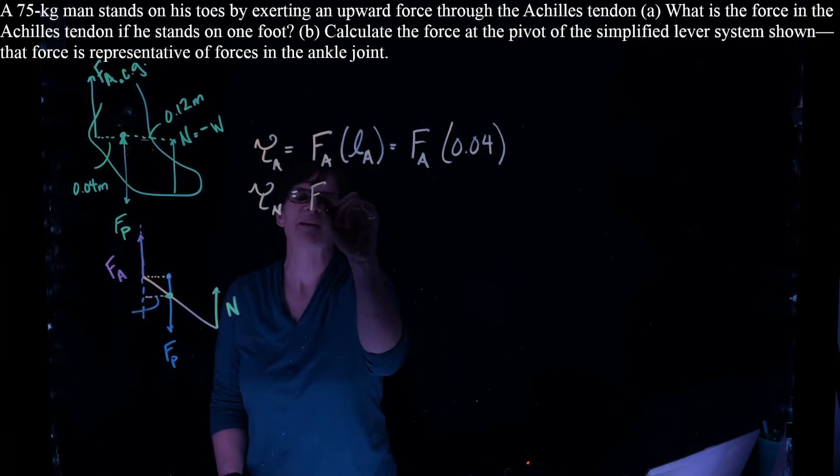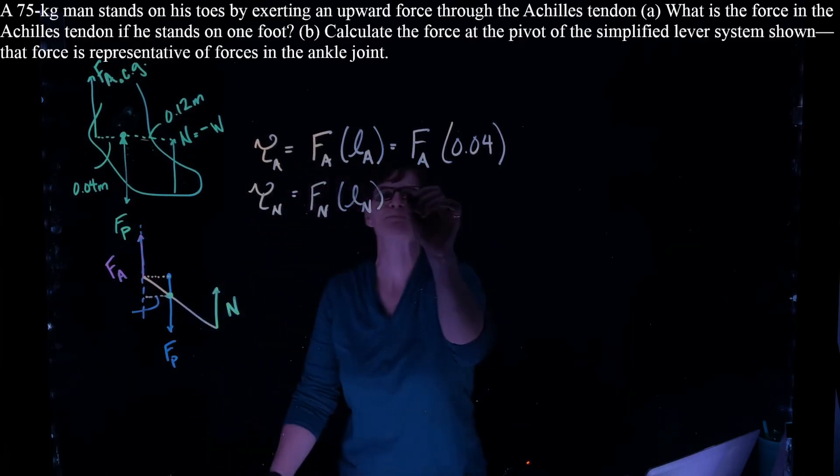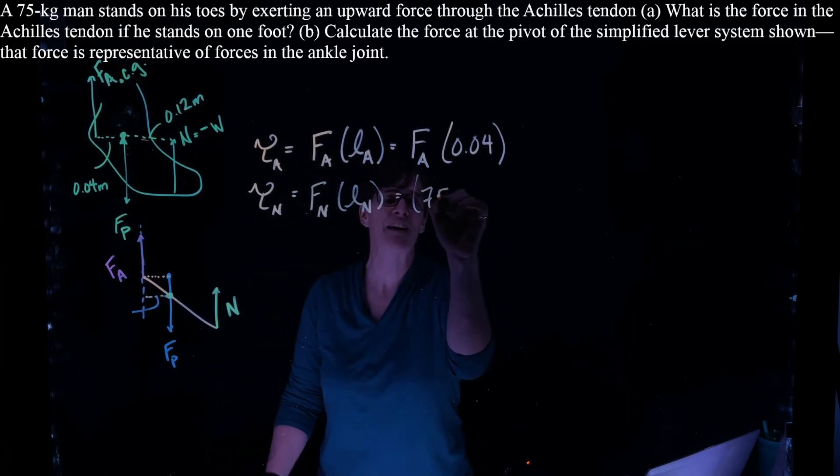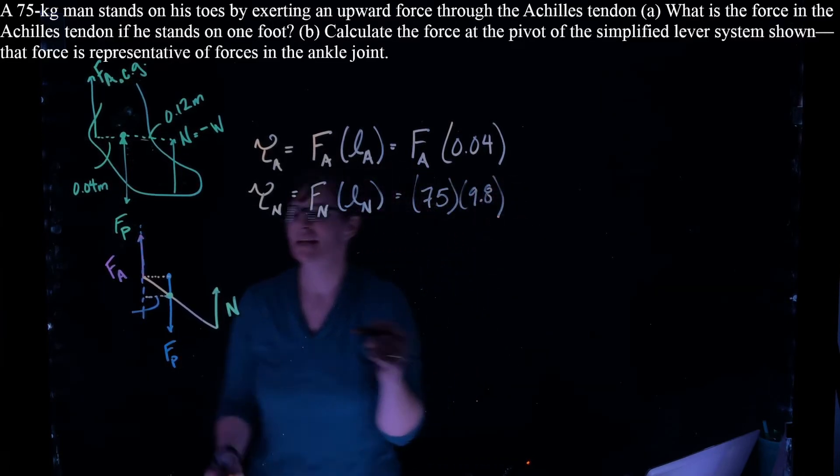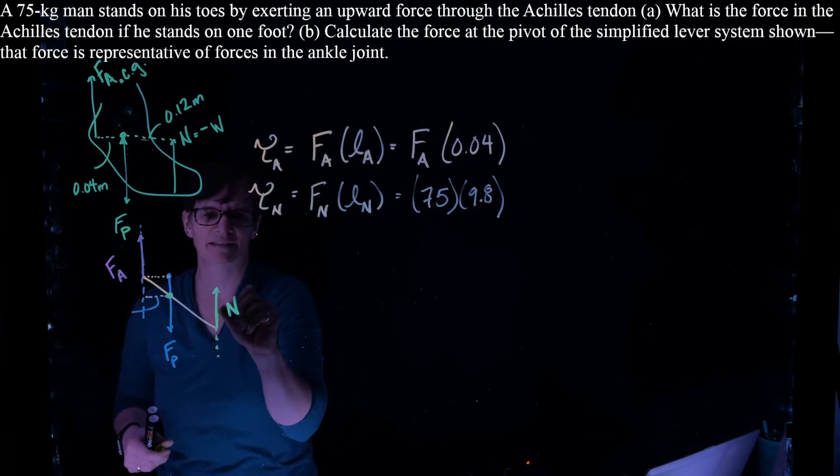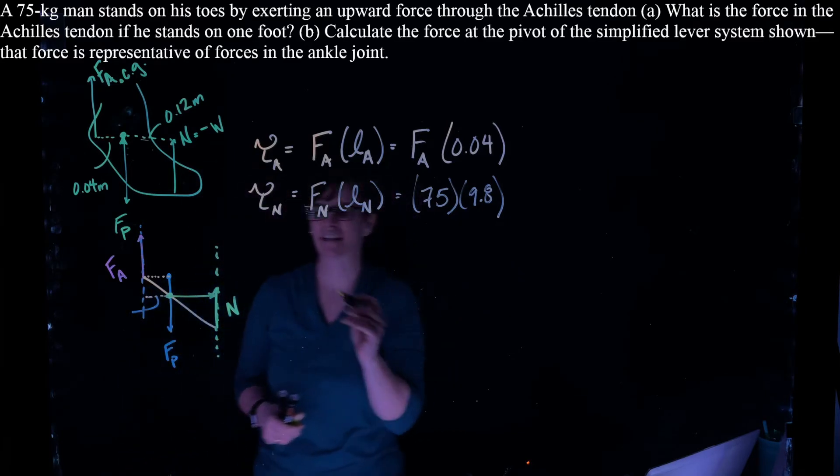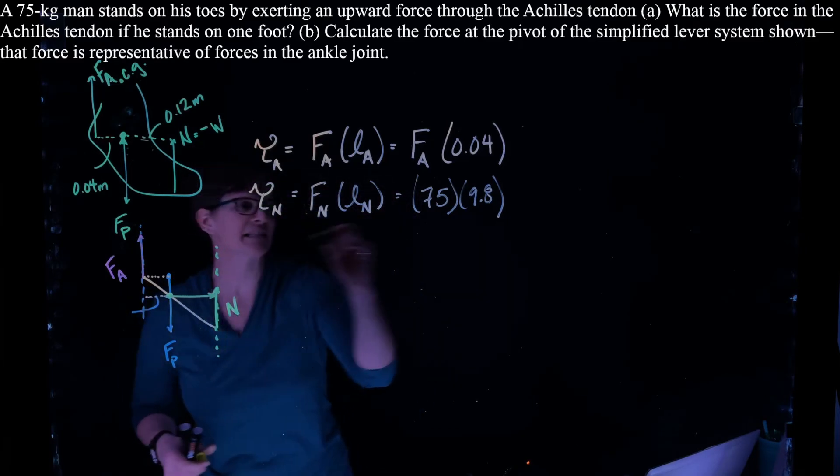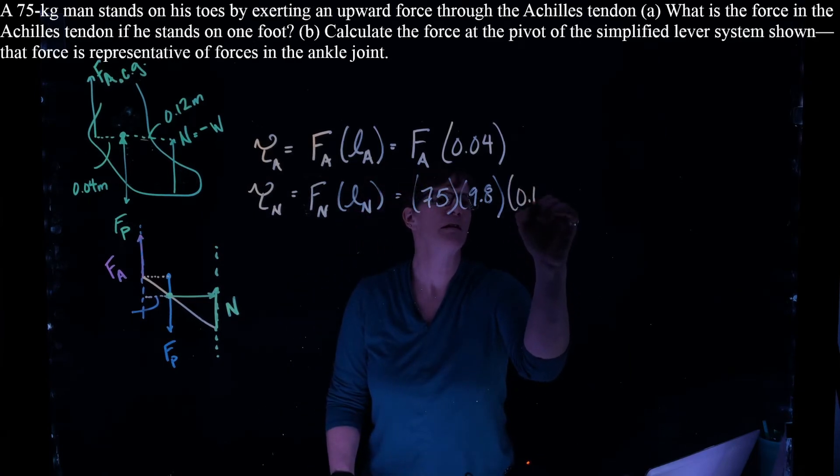We have the force of the normal force times its lever arm. So that's 75 times 9.8. That's the weight of the person. And similarly, this is my line of action. It's this distance between the pivot and the line of action. And we are given that to be 0.12 meters.